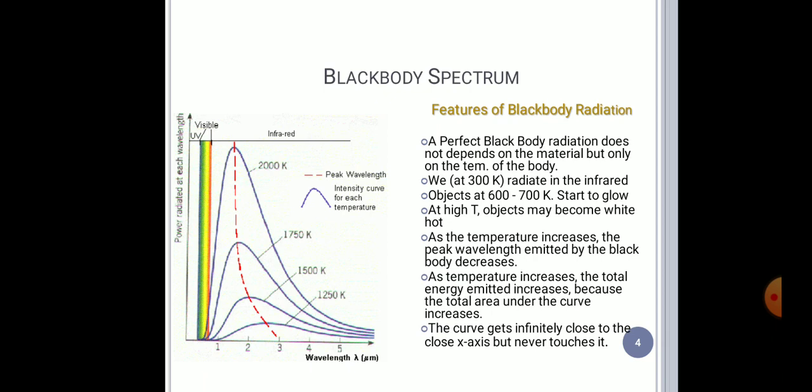As you can see on the screen, in this black body spectrum, you can see different graphs for different temperatures. As the temperature increases, the intensity of emitted radiation also increases. This is the complete process. I have already told you that it does not depend on the body material. It depends completely upon the temperature. This is called the black body radiation and black body spectrum.